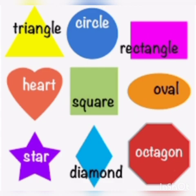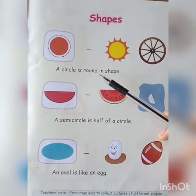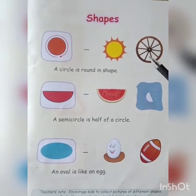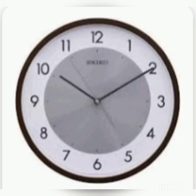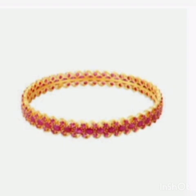Are you ready, children? The first shape is a circle. A circle is round in shape — like a sun, or like a wheel, like a clock, round in shape. Like a globe.